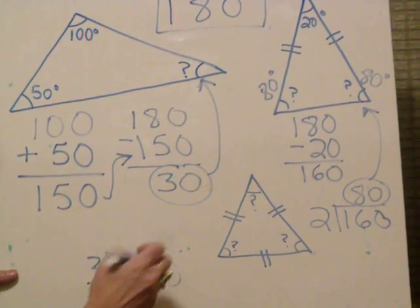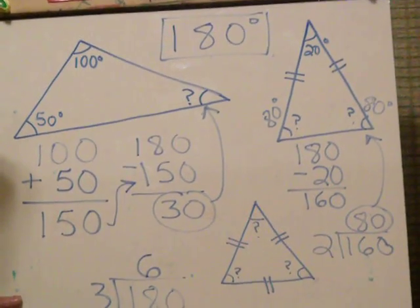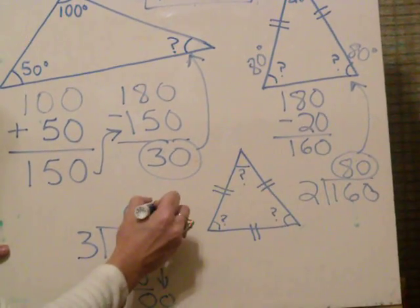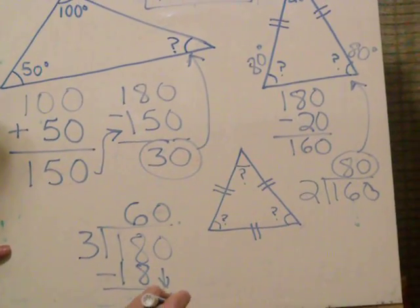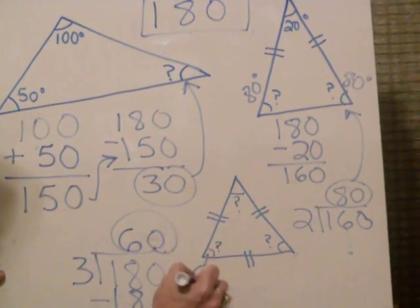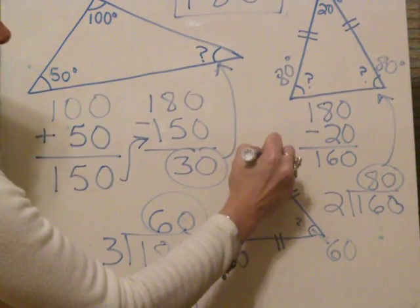3 goes into 18, six times. 6 times 3 is 18. And I bring down my zero. 3 goes into zero, zero times. And I get an answer of 60. So each of these angles are 60, 60, and 60.